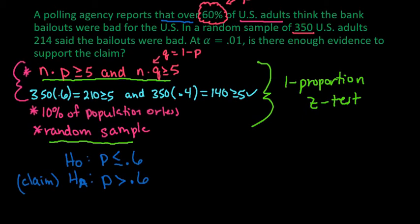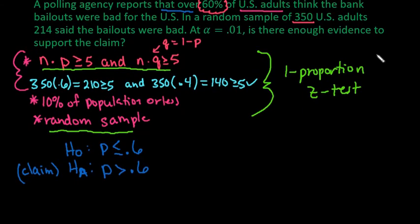The null hypothesis would be that P is less than or equal to 0.6. So in order to run the test, we have to know some information. If you are using the calculator, the two things that you have to know are X and N. And since we are using the Inspire, we need to know X and we need to know N.